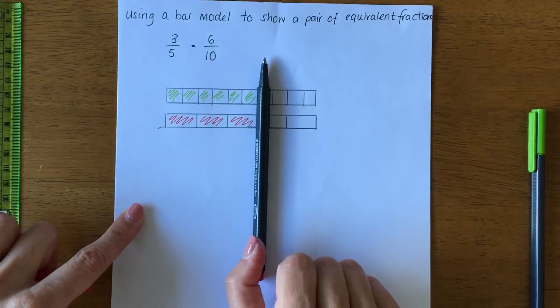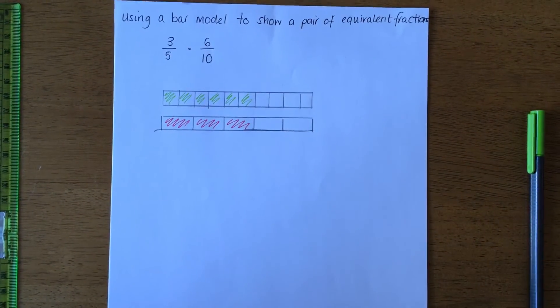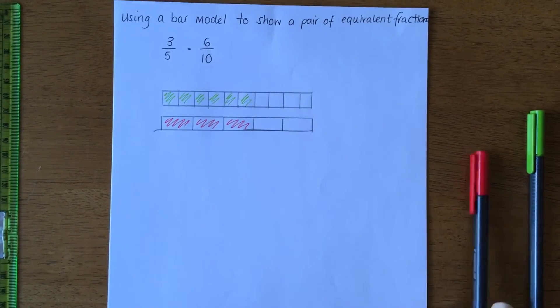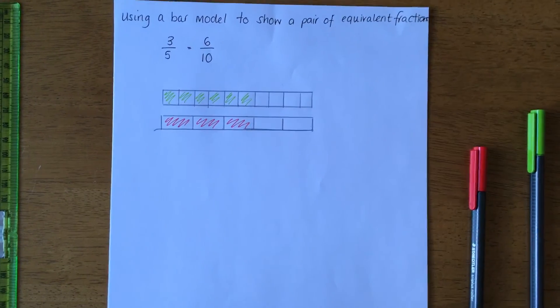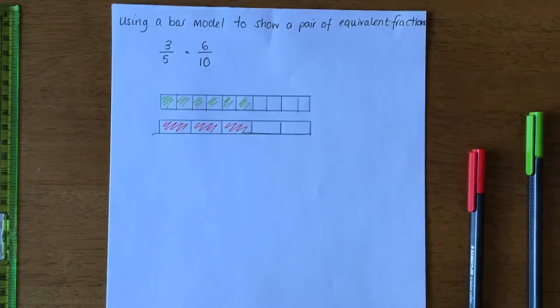So when it's asking you to use a bar model to show the pair of equivalent fractions, this is what I want you to do.